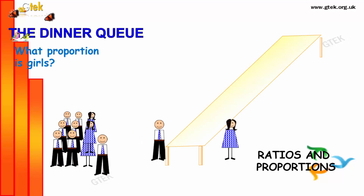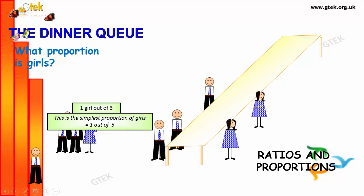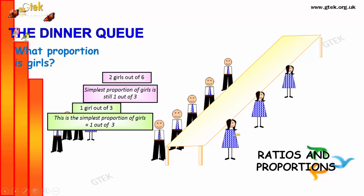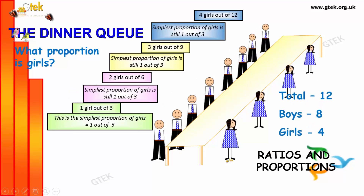Proportions: 1 out of 3, 2 out of 6, 3 out of 9, 4 out of 12. Proportions is nothing but proportion based on girls. So 1 girl out of 3 people, 2 girls out of 6 people, 3 girls out of 9 people, and 4 girls out of 12 people.